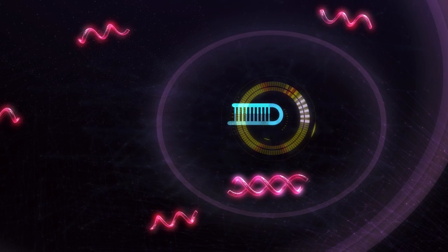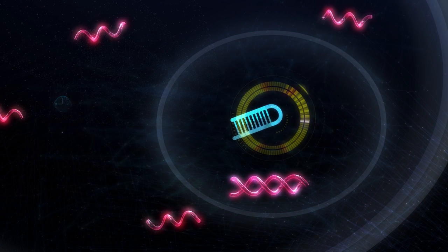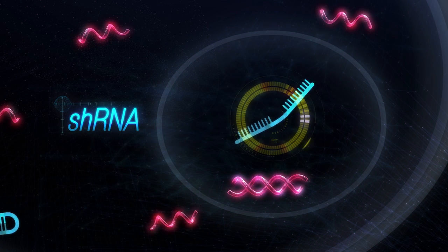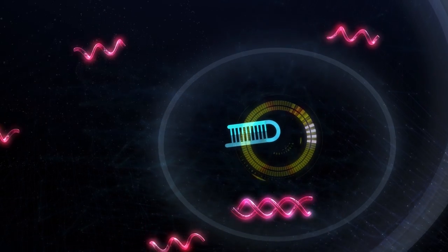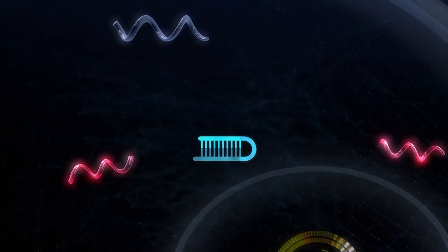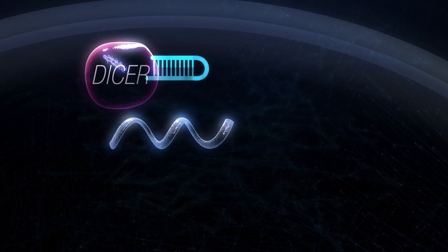Double-stranded RNA in the form of a short hairpin, or shRNA, is then continuously expressed from the construct. The shRNA passes through the nuclear membrane into the cytoplasm of the cell.